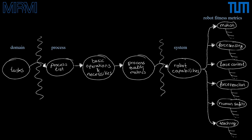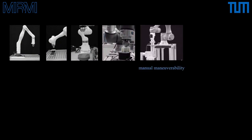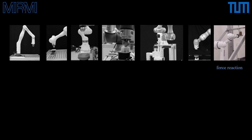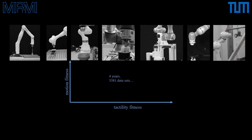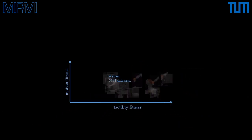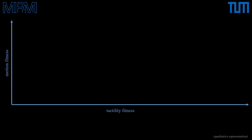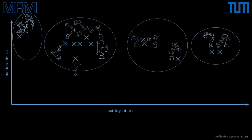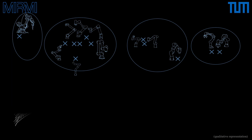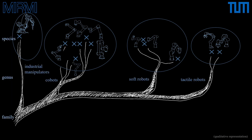Each of these groups consists of various metrics, such as the well-known pose accuracy and repeatability, which are part of motion fitness metrics. We prepared reproducible benchmark test setups and procedures to measure a total of 25 robot fitness metrics, including for example force sensing fitness, force controller fitness, impact stability, material consistency, manual maneuverability, human safety, and force reaction. Four years and 3,381 datasets later, we can now classify this family of robots based on their fitness in tactility and motion. Using machine learning, we automatically classify the genus of the tested robot species, thus creating the first branch in the Tree of Robots — where the fitness groups are the robots' genera and the individual systems are the species.